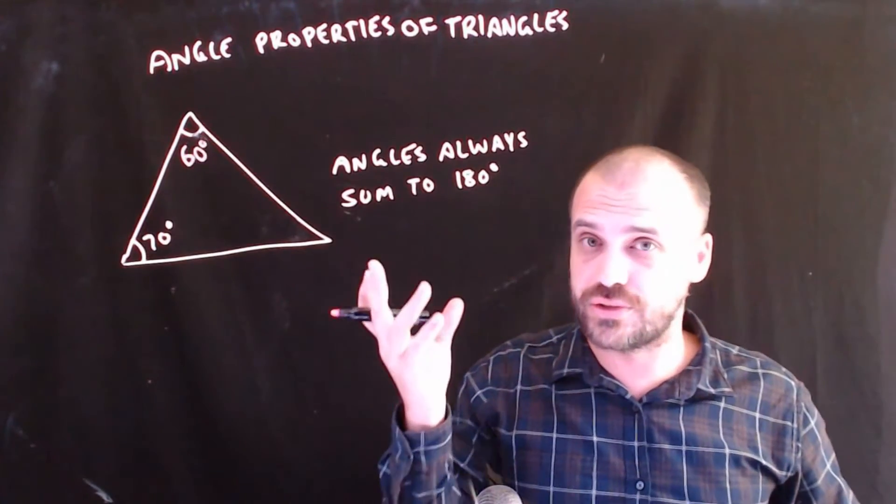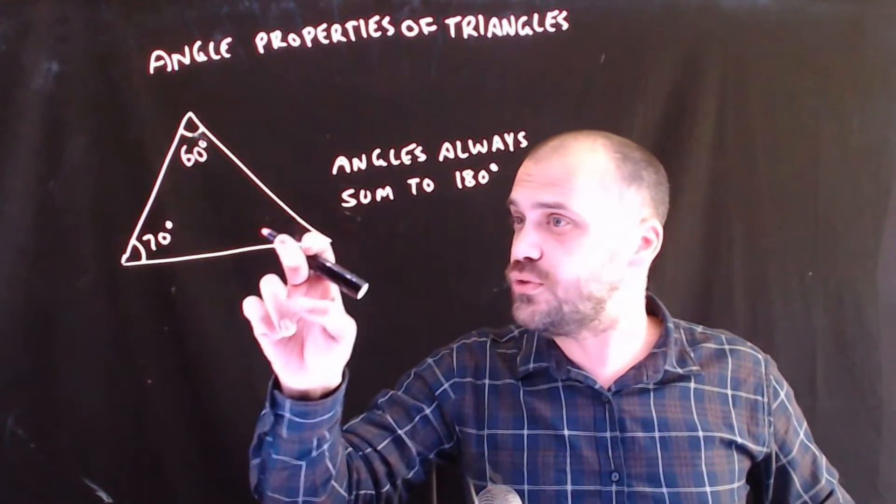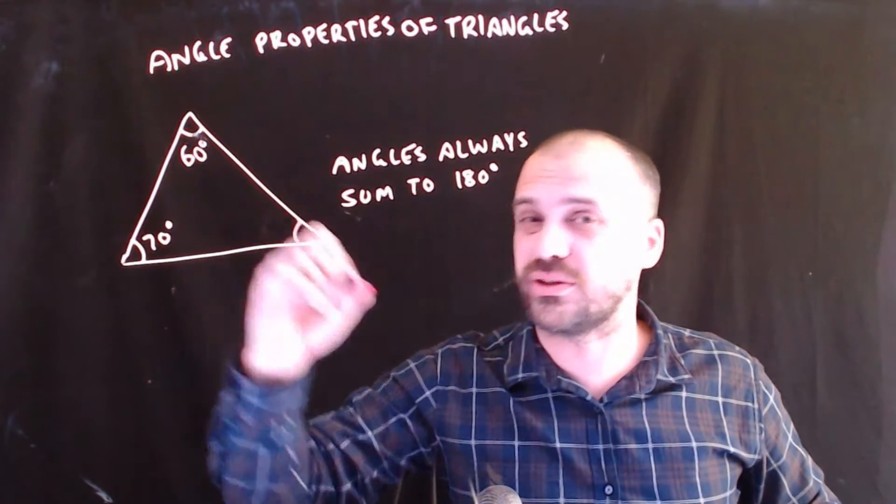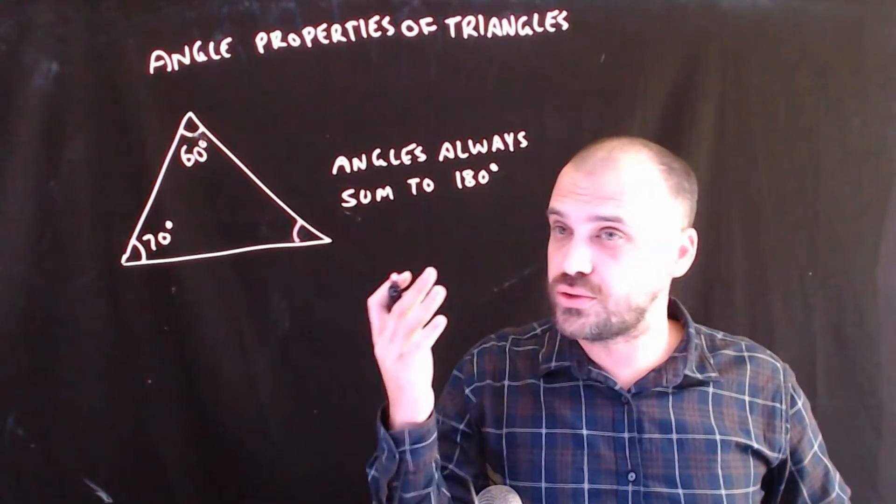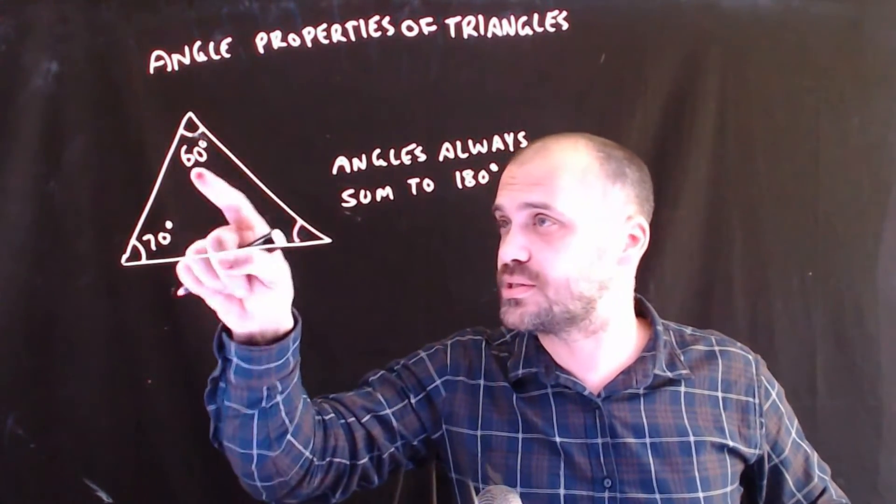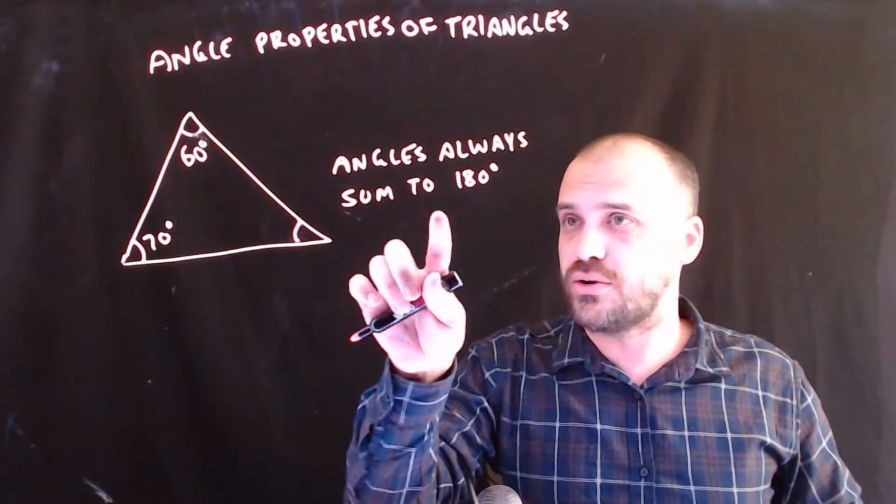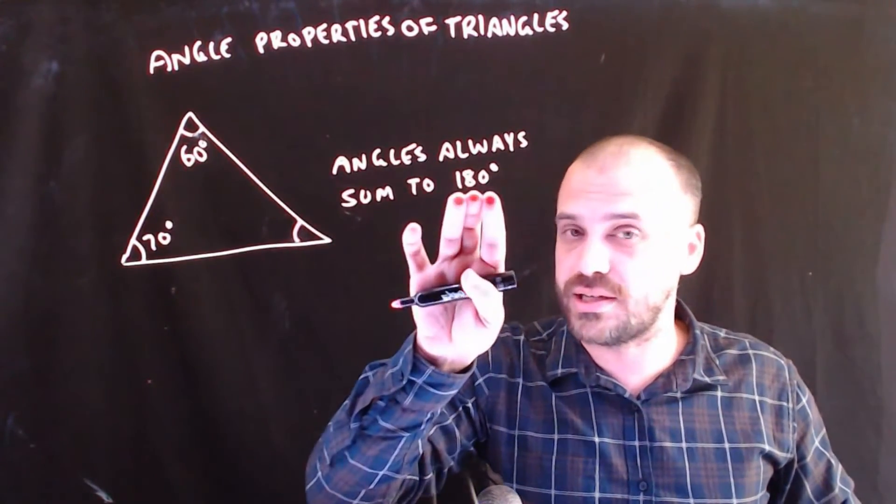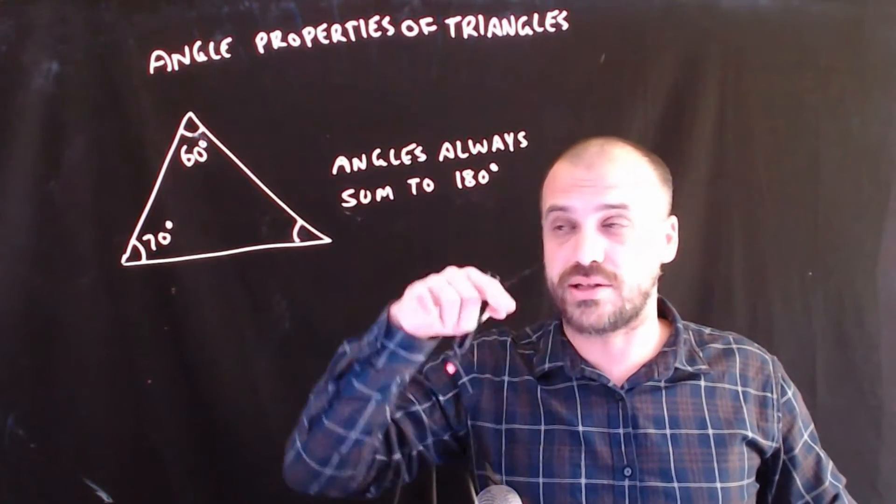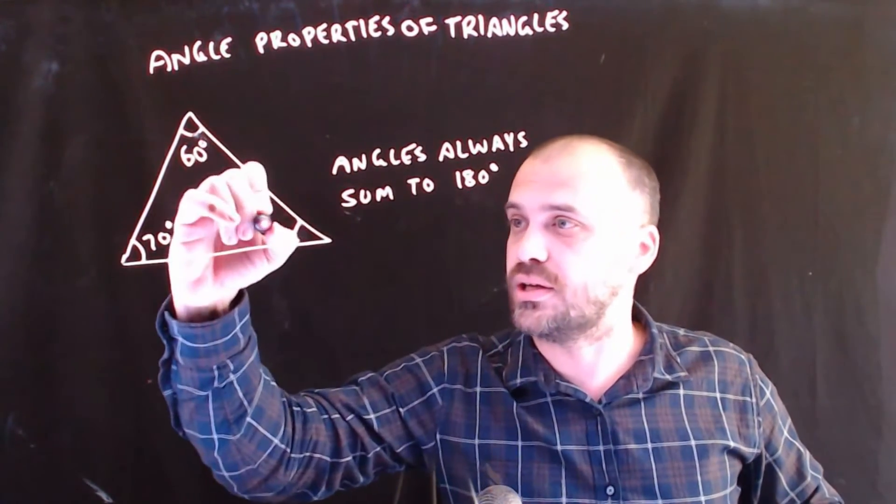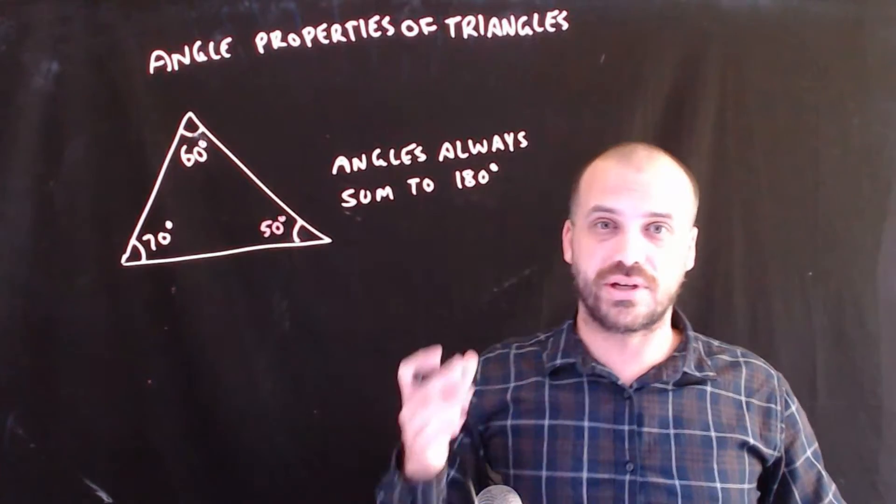This is extraordinarily useful information because if you didn't know the third angle and you wanted to find it, you could do so by saying 70 plus 60 adds up to 130. I know that the internal angles add up to 180, so therefore 180 minus 130 is 50 degrees. Useful.